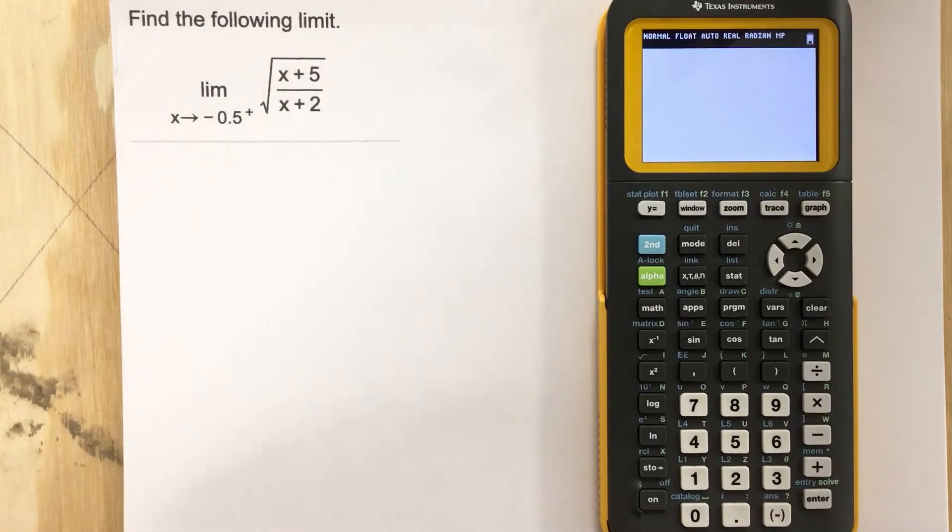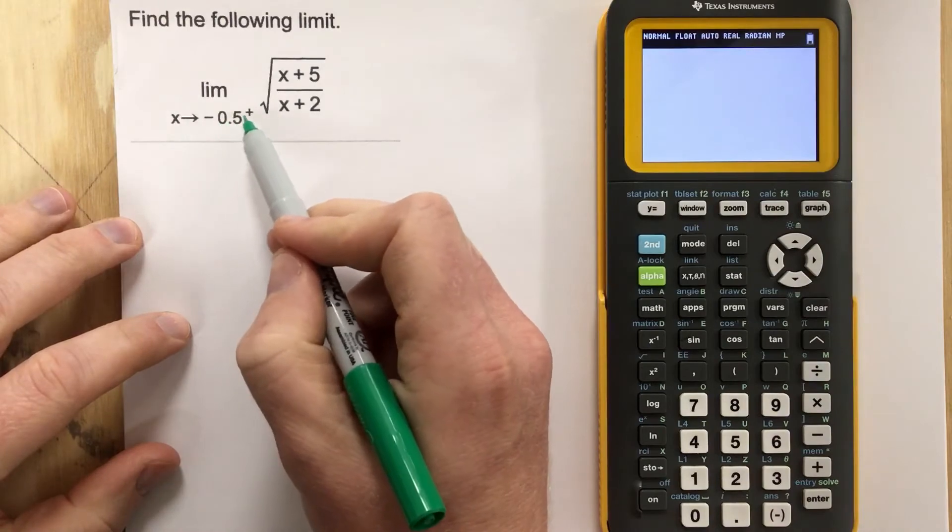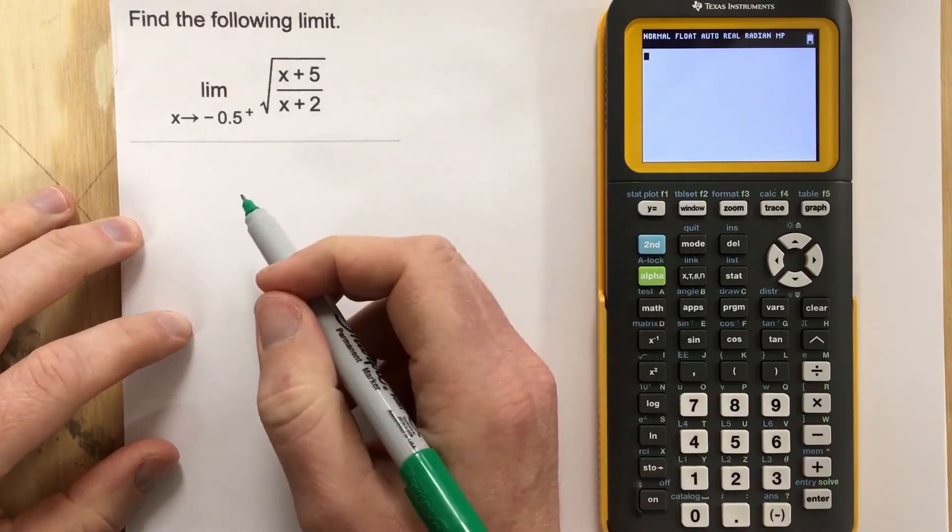So just like previous problems, if they want us to look at the limit as x approaches negative 0.5 from the right, we want to check: is it actually defined at negative 0.5?